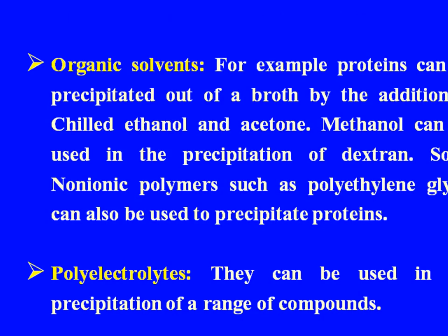Organic solvents: for example, proteins can be precipitated out of a broth by the addition of chilled ethanol and acetone. Methanol can be used in the precipitation of dextrin. Some non-ionic polymers such as polyethylene glycol can also be used to precipitate proteins.